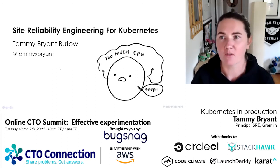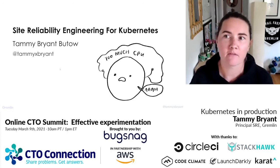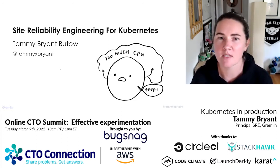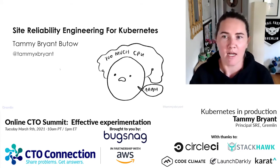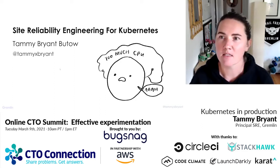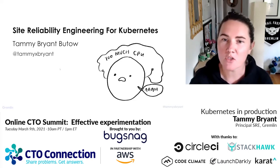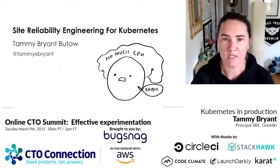Right now I work at Gremlin as a principal site reliability engineer where I focus primarily on failure injection — injecting failure on purpose to uncover issues through practicing chaos engineering. Prior to this I worked at Dropbox as an SRE manager where I also did a lot of chaos engineering to keep our systems up, looking after databases, block storage, Kafka, developer tools, and lots of other interesting things.